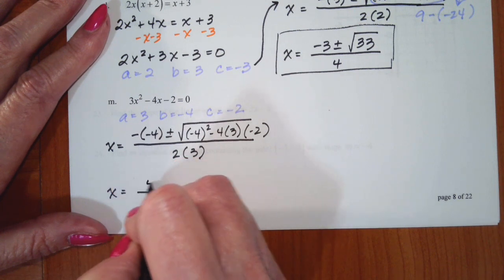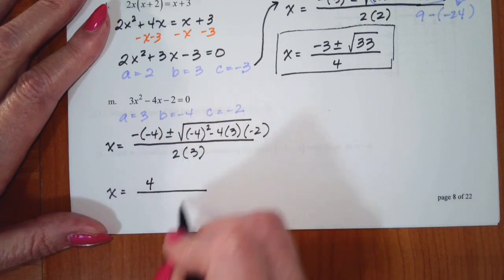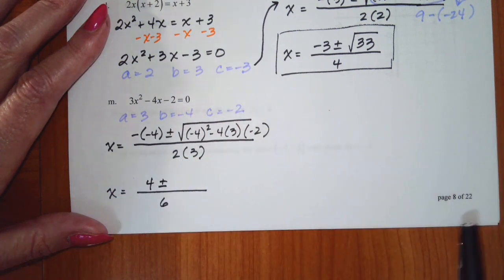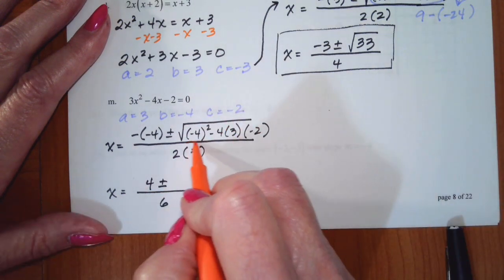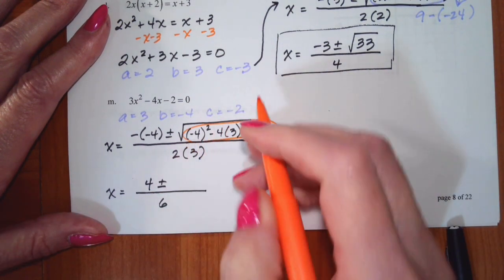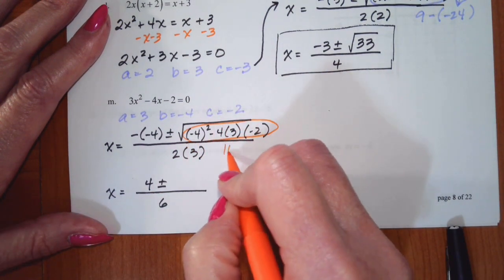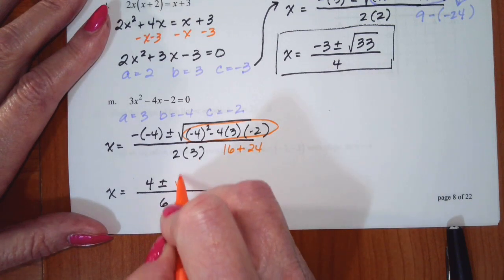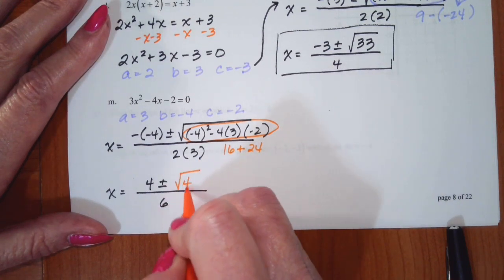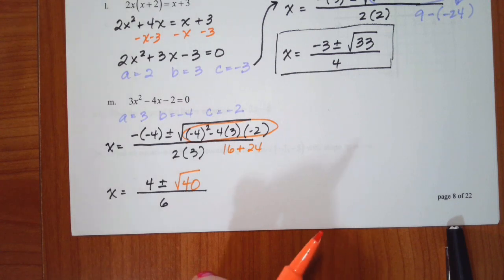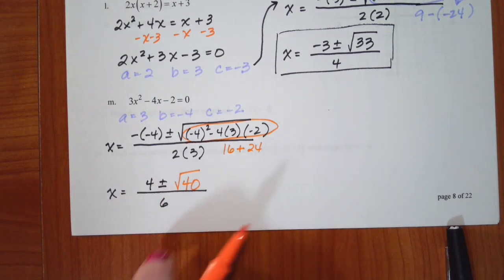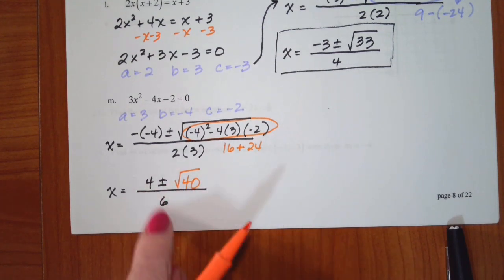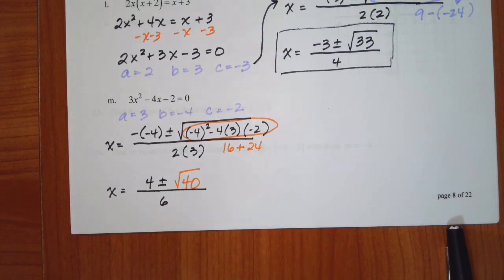The opposite of negative 4 is 4, and 2 times 3 is 6. Under the radical, this is 16 plus 24, so that's the square root of 40. I notice there are a bunch of even numbers here, so it looks like I can simplify.